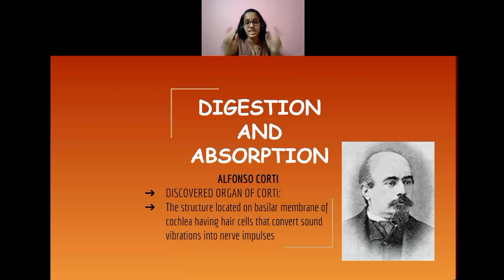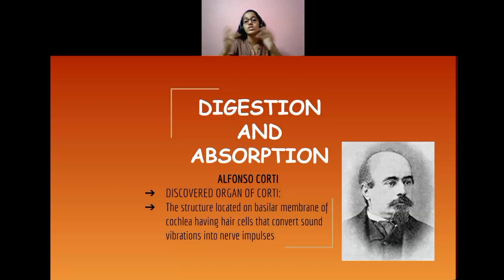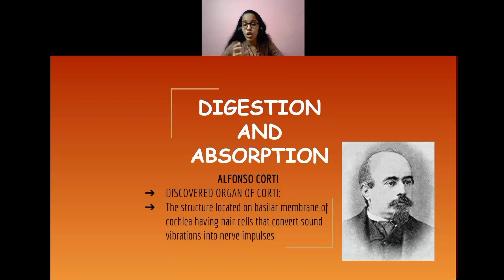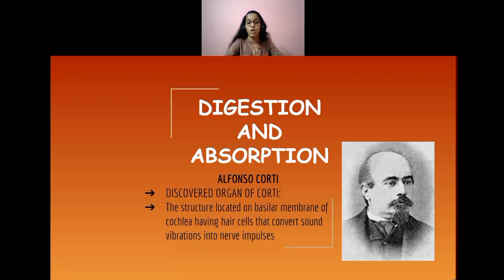The first point we see is about the scientist Alphonse Corti, and he's the one who discovered the Organ of Corti, which is a structure located on the basilar membrane of the cochlea. It has hair cells that convert vibrations into nerve impulses.